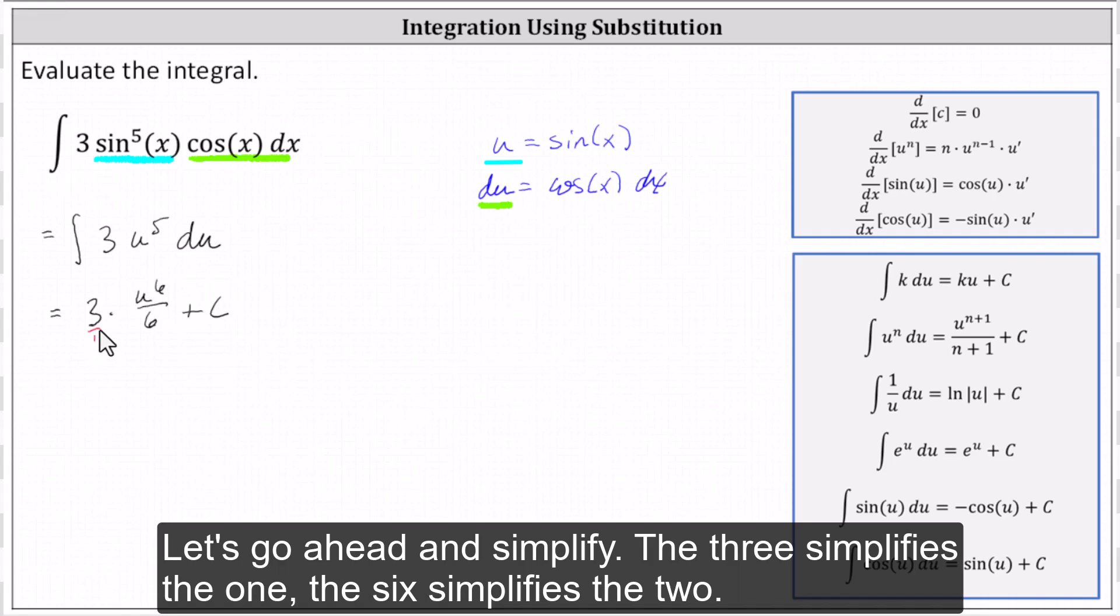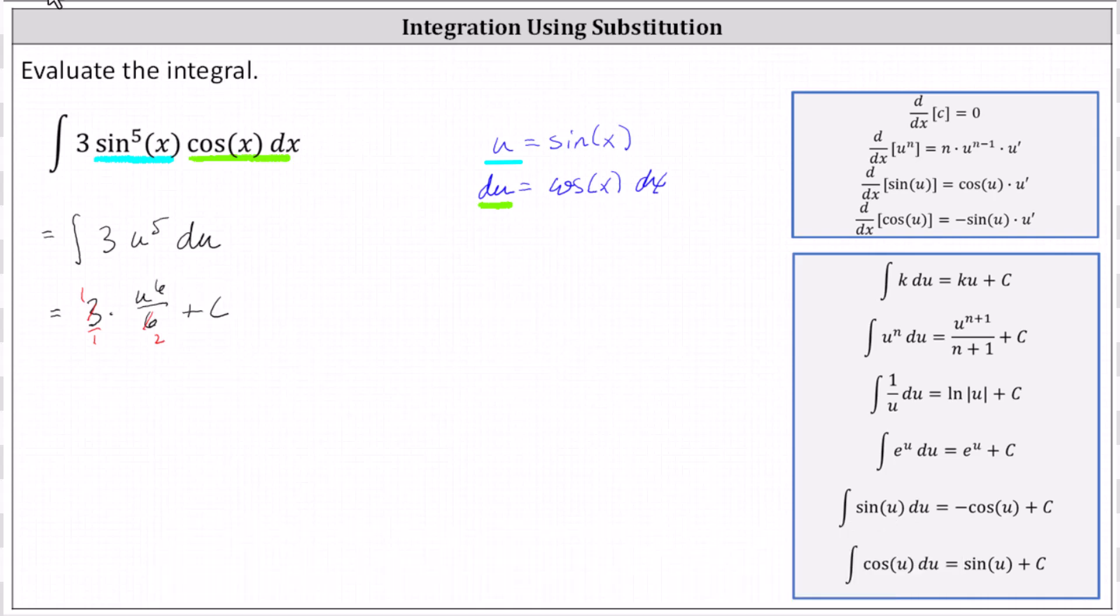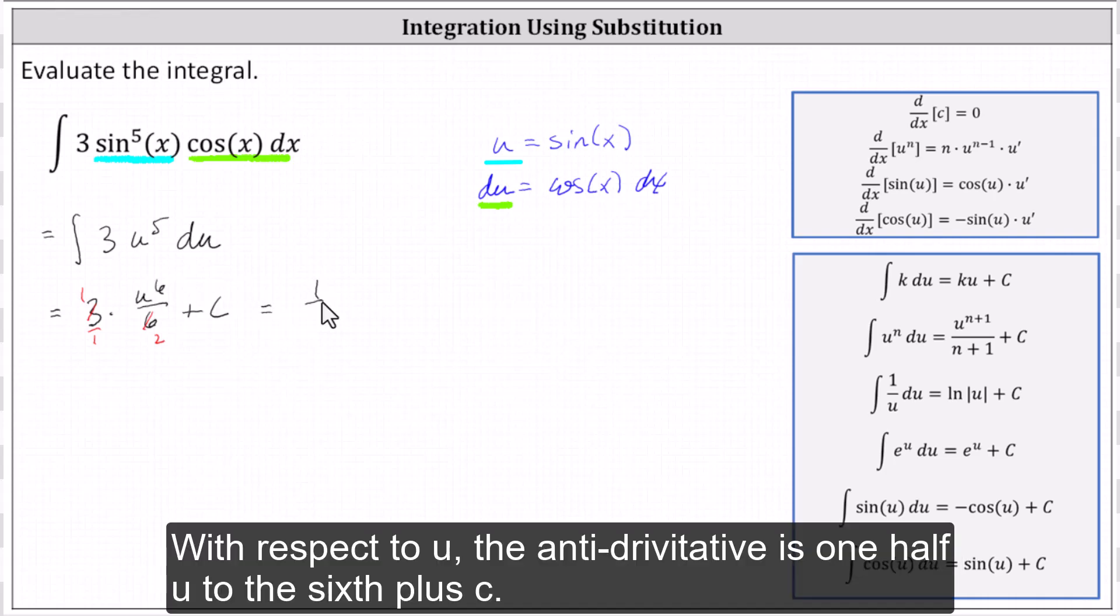Let's go ahead and simplify. Three simplifies to one, the six simplifies to two. With respect to u, the antiderivative is one half u to the sixth plus c.